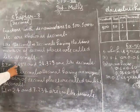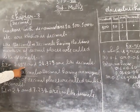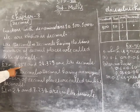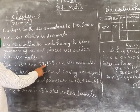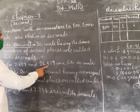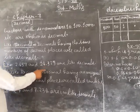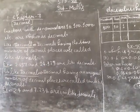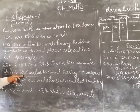So after the decimal point, 2.657 has 3 digits, and 24.329 also has 3 digits after the point — these are like decimals.